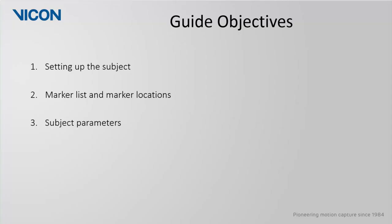In this guide we will first look at setting up the subject properly within Nexus. Next we will look at the markers that comprise this template and where to actually place them on the body. Lastly we will look at the subject parameters which are used to calculate segmental inertial properties and joint center locations.